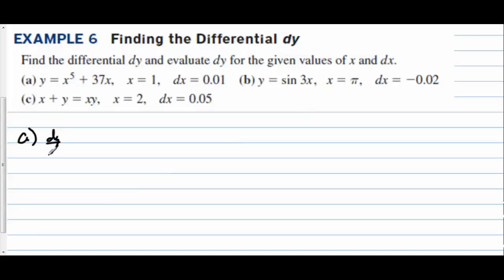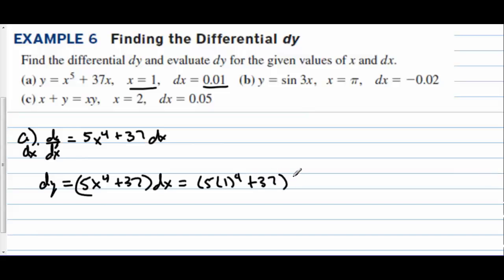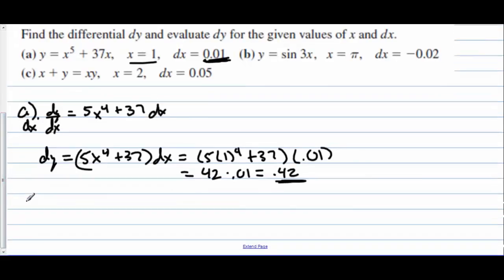In letter a we want to find dy/dx which is 5x⁴ + 37. And now we can multiply both sides by dx. These differentials act like variables. So dy = (5x⁴ + 37) dx. We want to evaluate this when x is 1 and when the differential is 0.01. So we have 5(1)⁴ + 37 times 0.01. So 5 + 37 is 42 times 0.01, that's 0.42. Now what we found is when x changes by 0.01, y changes by 0.42. These differentials mean slight changes in the variables.